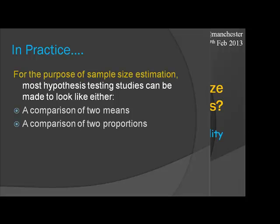When doing power and sample size calculations, 90% of the time it will either be a comparison of two means or a comparison of two proportions. Despite the complexity of the design, it will boil down to this. You very rarely have more prior information than an idea of how big the effect size is and how big the variance is likely to be. You end up simplifying it down to either two means or two proportions.